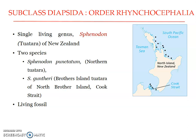Order Rhynchocephalia is represented by only a single living genus, Sphenodon, of New Zealand. They are commonly called tuatara by native speakers. It was formerly found throughout New Zealand, but due to the advent of man and domesticated animals, it is now not found on the main island but restricted to 32 smaller islands around New Zealand. Earlier, two species were recognized: Sphenodon punctatum, commonly referred to as the common tuatara, found throughout the major portion of New Zealand.